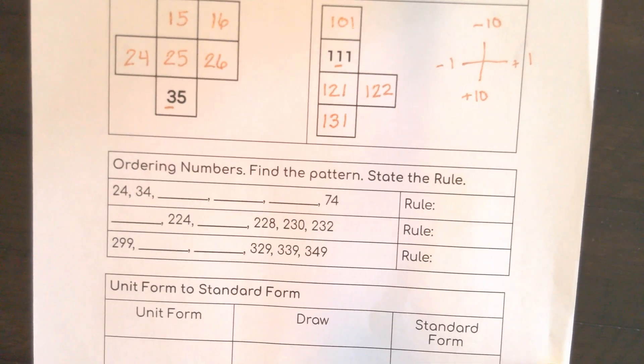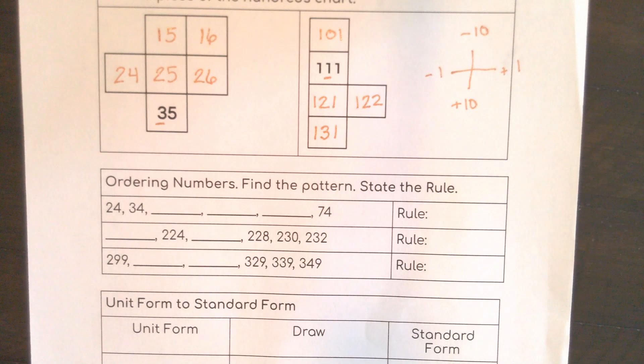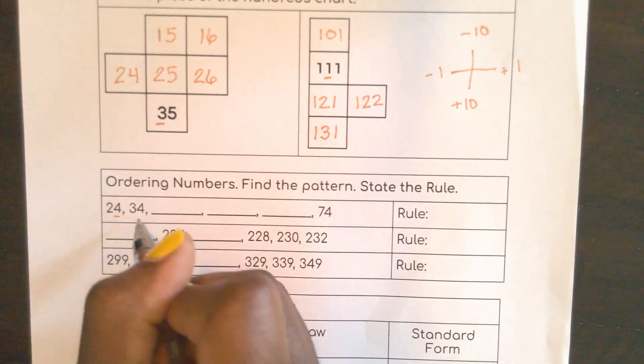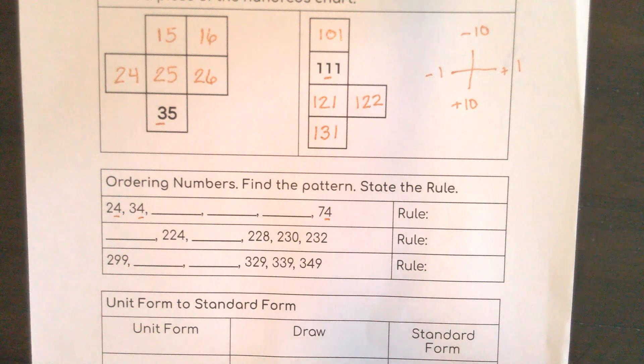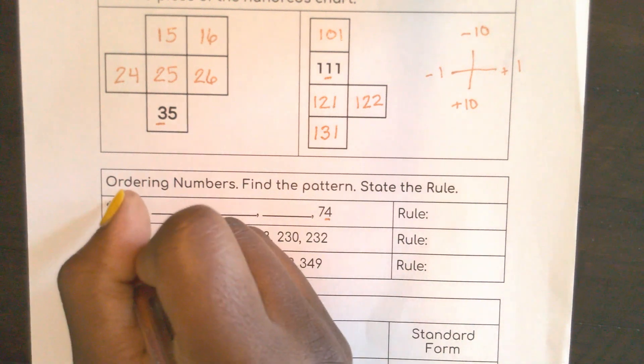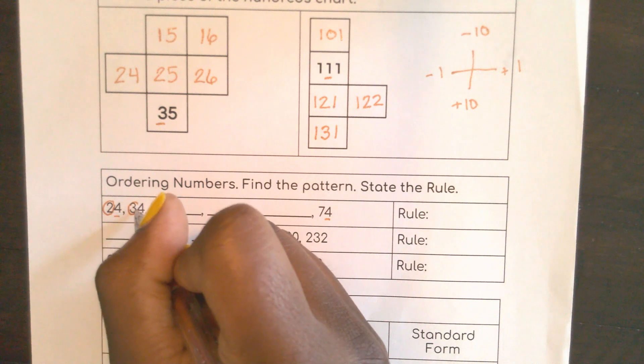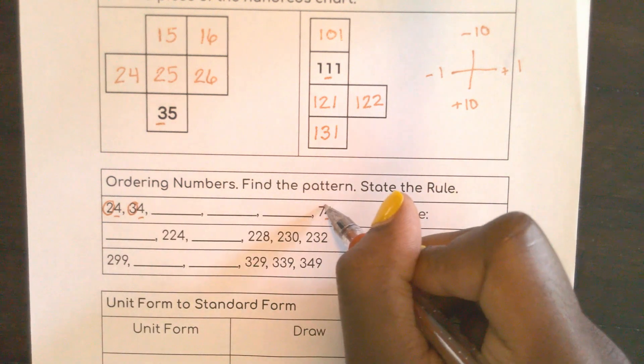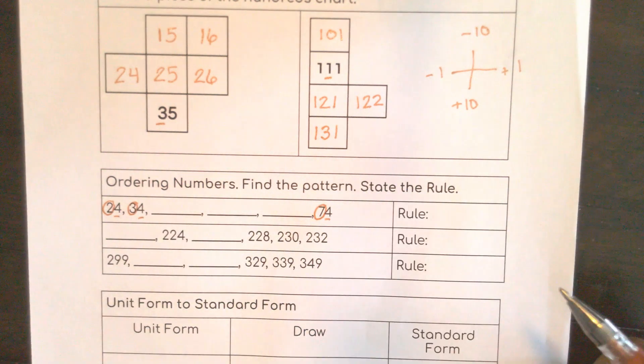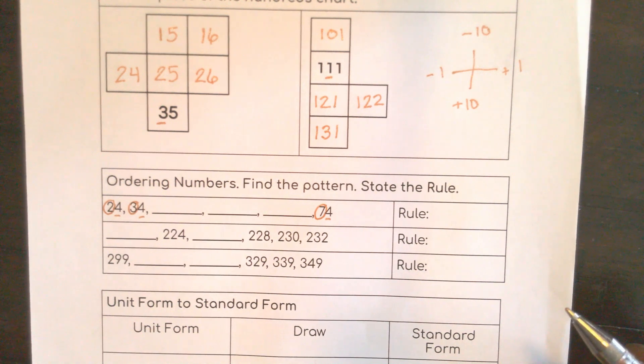Down here with ordering numbers, I'm not only going to find the pattern but I have to state the rule. So let's look at what's similar. I have 4, 4, and 4, that's similar. That's probably going to be in all the numbers. What is different? My tens place I have 2, my tens place I have 3, down here my tens place I have 7. So that would cause me to believe that it's not counting by 1, it's counting by 10.